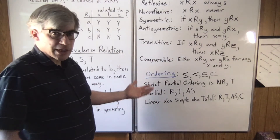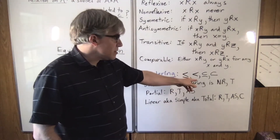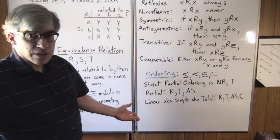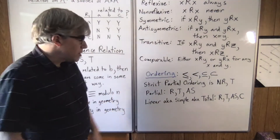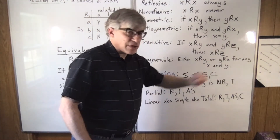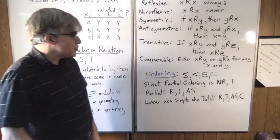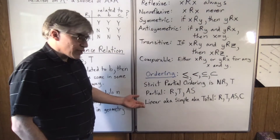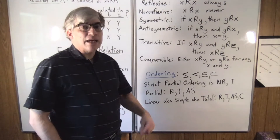The other kind of relation you're likely to encounter is the ordering — things like less than or equal, less than, subset or equal, proper subset. There are three kinds, and unfortunately the naming is not consistent from book to book. A strict partial ordering is non-reflexive and transitive. A partial ordering is reflexive, transitive, and antisymmetric. And a linear ordering — also called simple ordering or total ordering — is reflexive, transitive, antisymmetric, and comparable.